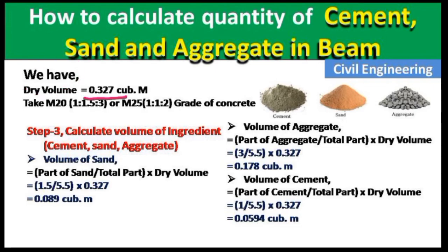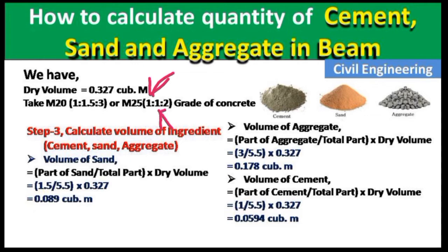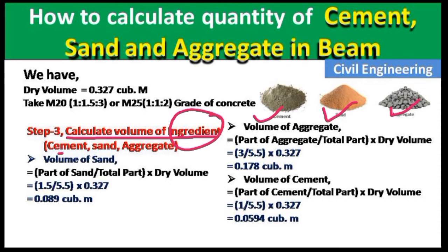Now take the grade of concrete for the beam — M20 or M25, as per your requirement. I am taking M20 as an example. The mix ratio for M20 is 1:1.5:3, where 1 is the part of cement, 1.5 is the part of sand, and 3 is the part of aggregate. Step 3: Calculate the volume of each ingredient — cement, sand, and aggregate.